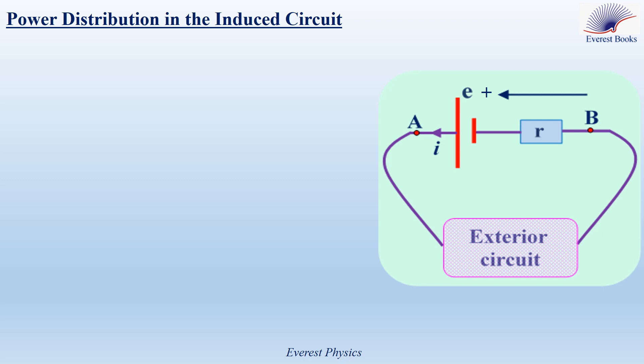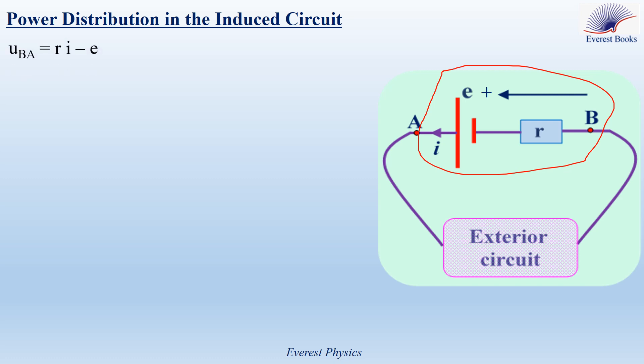Now let's move to the power distribution in the induced circuit. Consider this circuit: the equivalent generator with terminals A and B is connected across the exterior circuit, which could include a resistor, a lamp, a motor, or any other electrical load. The positive sense is from B to A, which means U_BA = RI − E. When writing the voltage across the equivalent generator, pay attention to the chosen positive sense and not to the direction of the current. Rearranging: E = RI − U_BA, and since −U_BA = U_AB, this gives E = RI + U_AB.